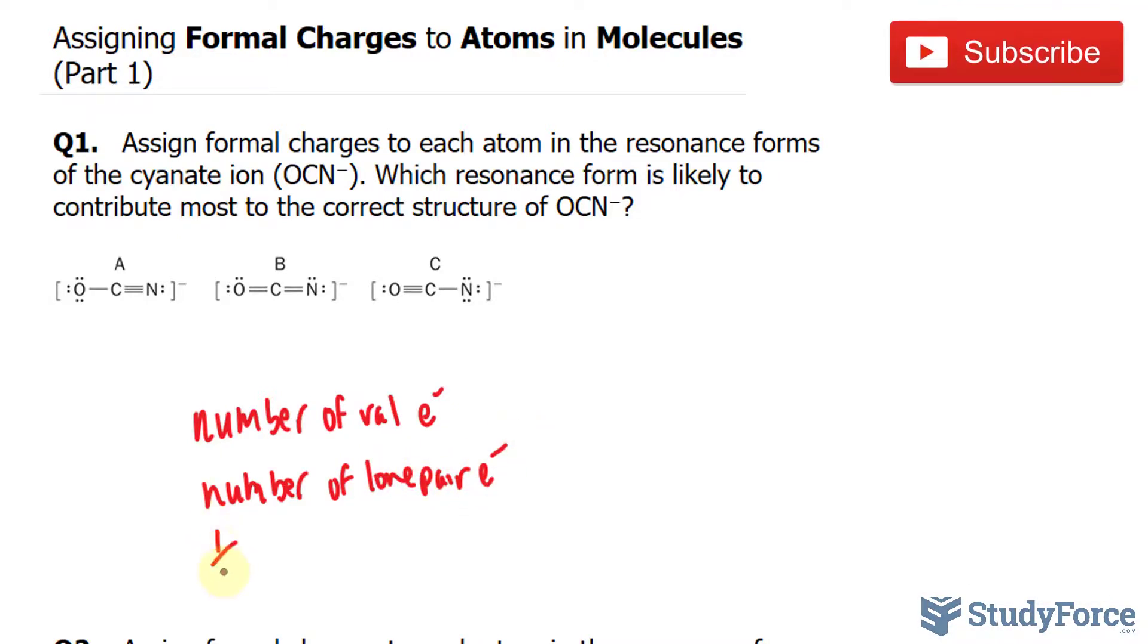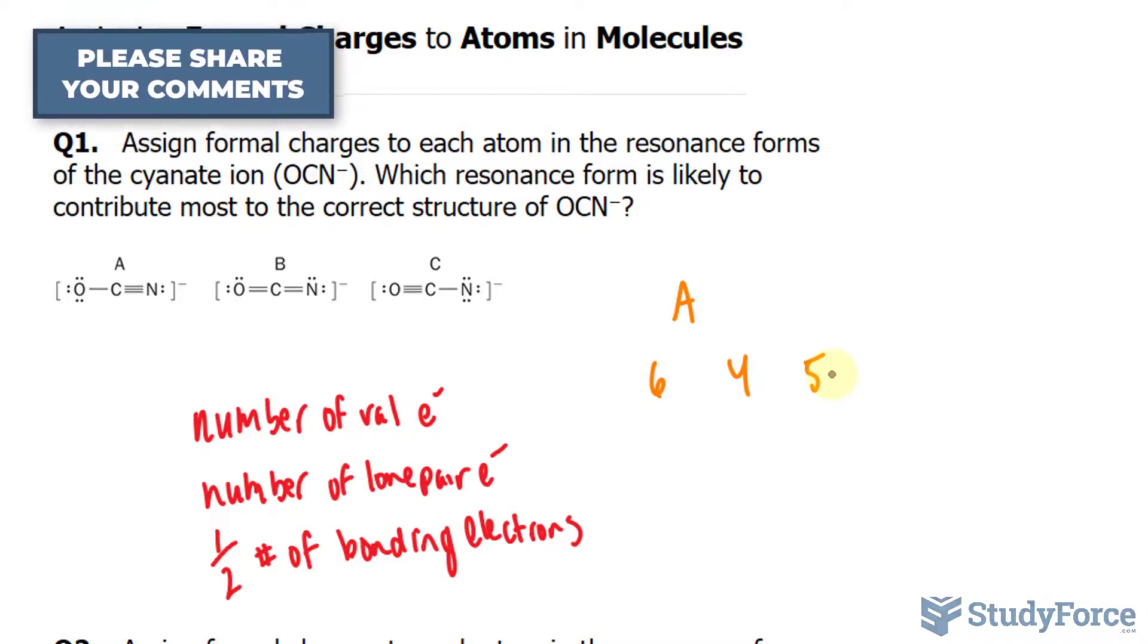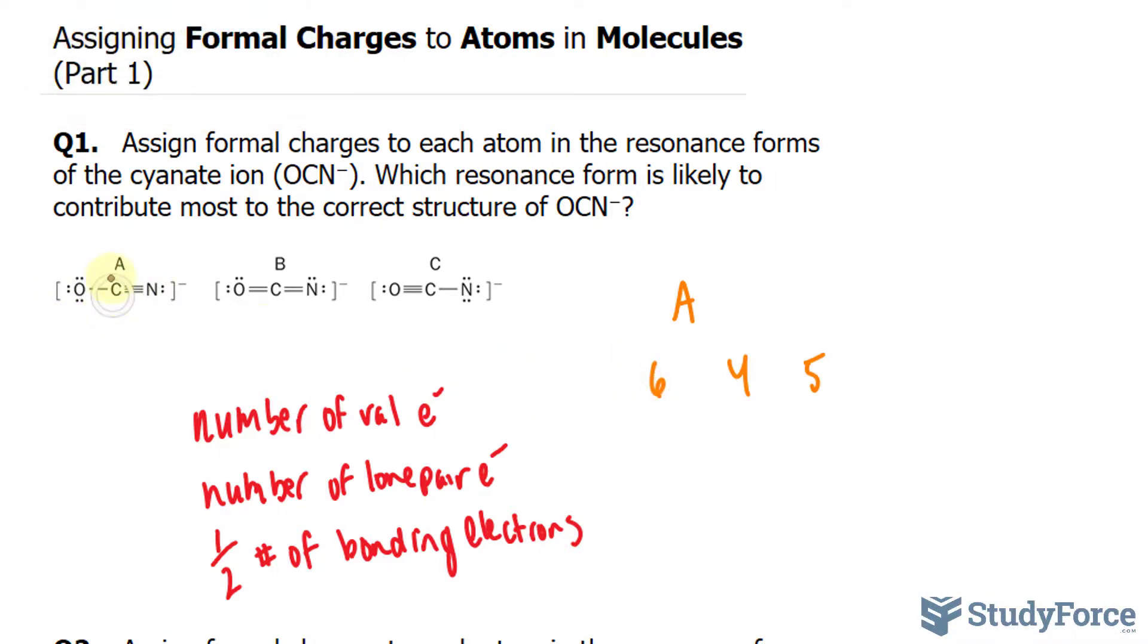And our last row will be half the number of bonding electrons. So beginning with structure A, the number of valence electrons for oxygen is 6, for carbon is 4, and for nitrogen is 5. Remember that these numbers can be obtained just by locating where the atoms are on the periodic table. Because this is in the 6th column, it has 6, that is in the 4th column, it has 4, and that is in the 5th, it has 5. And of course, the same can be said for B and C.